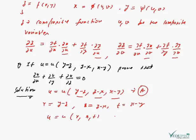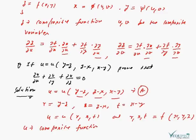And r, s, t are all functions of x, y, z. So u is here the composite function, and the composite variables are x, y, and z. This means we can differentiate composite function u with respect to composite variables, as we just discussed above.